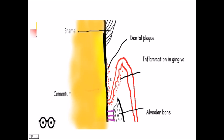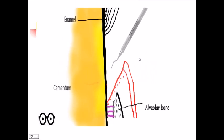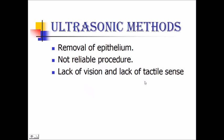First, thorough scaling and root planing is done, then we remove the lining of inflamed epithelium — this is known as curettage. With the help of a periodontal instrument, we scrape the gingival margin. Chemical agents that can be used include sodium sulfide, phenol camphor, and sodium hypochlorite. The major disadvantage of chemical agents is that their effect cannot be controlled, so this is no longer done in clinical practice.